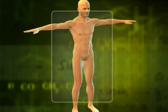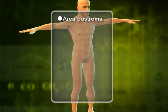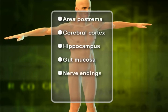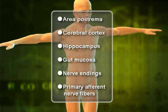5-HT receptors are found in the area prostrema, cerebral cortex, hippocampus, the gut mucosa, nerve endings, and primary afferent nerve fibers.